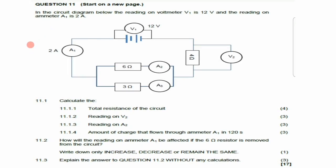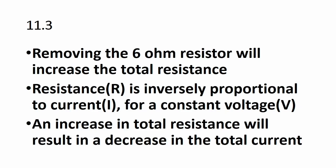Question 11.3 says explain the answer to question 11.2 without any calculation. Removing the 6 ohm resistor will increase the total resistance. According to the formula R = V/I, resistance is inversely proportional to current for a constant voltage. Therefore, an increase in total resistance results in a decrease in the total current.